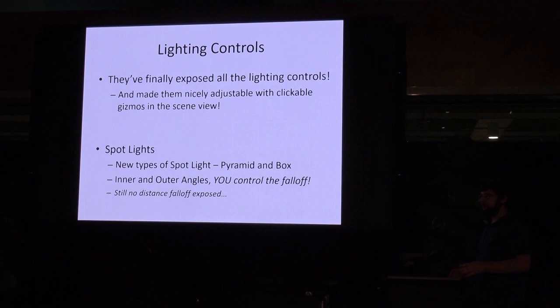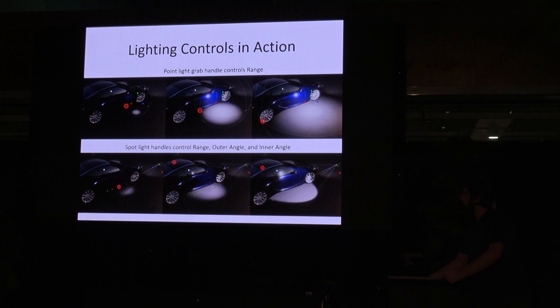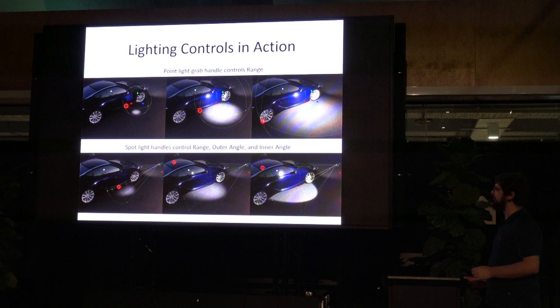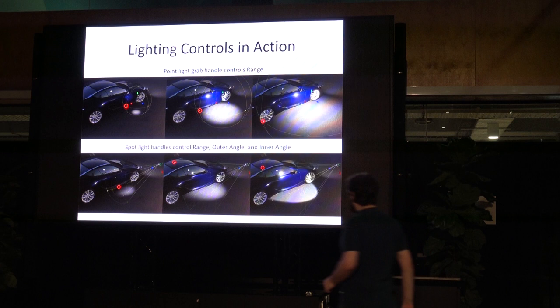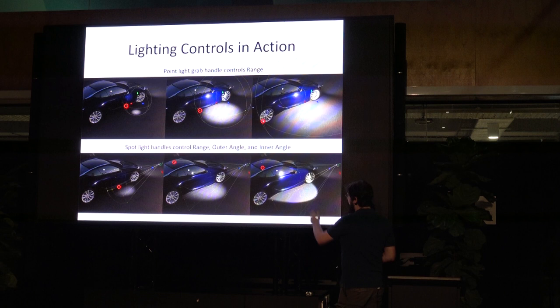Lighting update — they've finally exposed in the scene view all of the proper lighting handle controls. Previously they'd done one or two, but now they actually feel well-programmed. They've also added several new types of spotlight and controls for your usual spotlight. For a point light, you can change its radius. For a spotlight, the middle handle changes depth, the outside changes the outer cone angle, and the inside — a new part — changes the inner cone angle, so you get a clean falloff from full strength in the center to zero at the outside. A simple quality gain for very little performance cost, without needing a light cookie texture.